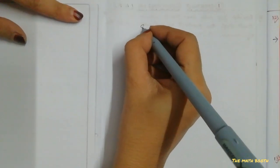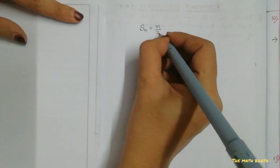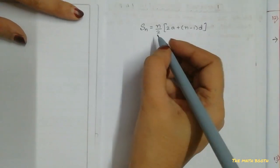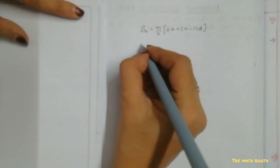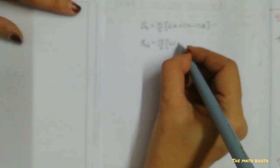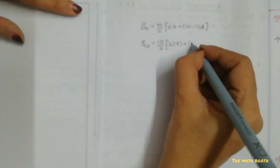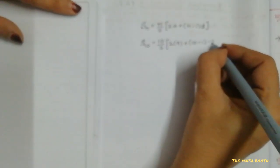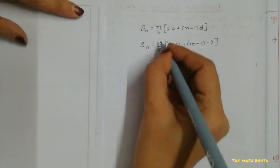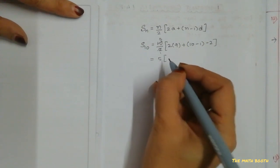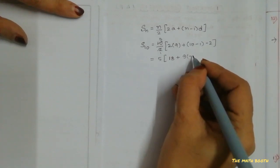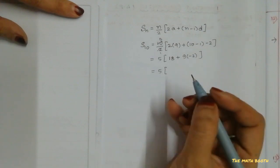S₁₀ equals, Sₙ formula: Sₙ equals n by 2, 2a plus (n - 1)d. So a value 9, plus n minus 1, 10 - 1, D value is -2. So let us find now: 2 into 5 is 10, so 5 as it is, 9 times 2 is 18, plus 10 - 1 is 9 times -2 as it is. So 5 as it is outside.